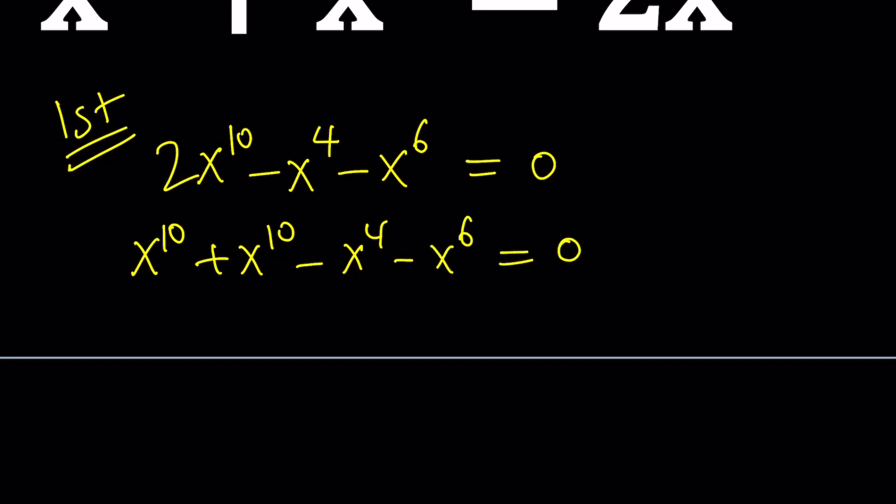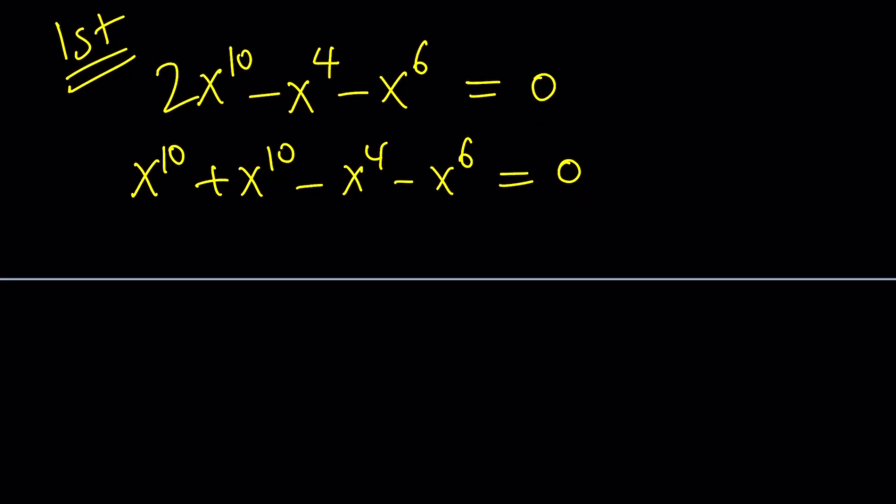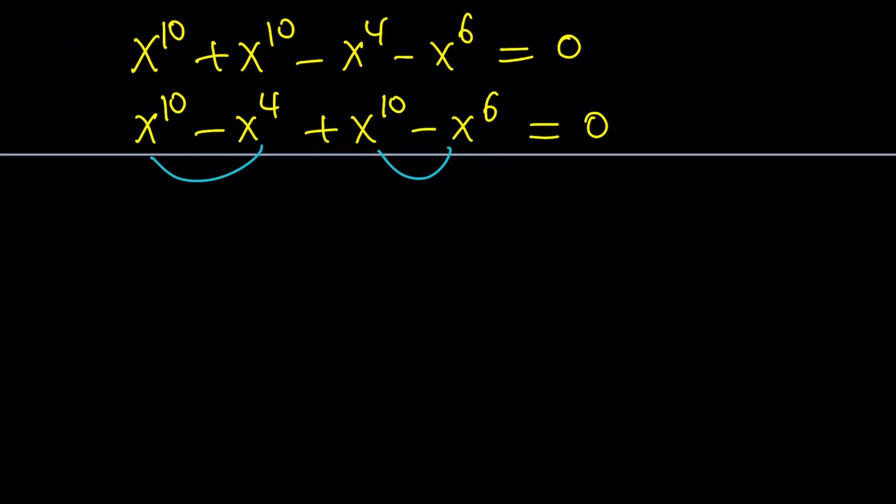And the reason behind that is I want to factor this expression by grouping. One of the things that I want you to notice is that the sum of the coefficients is 0. You probably know what that means. But this allows you to basically group these terms into two groups and then factor each one, and then eventually you're going to get a common factor. So for these two, x to the 10 minus x to the 4th, I can see that x to the 4th is the greatest common factor. Inside, we have x to the 6 plus 1. And then we take out x to the 6, which is the greatest common factor again, and we get x to the 4th minus 1 equals 0.